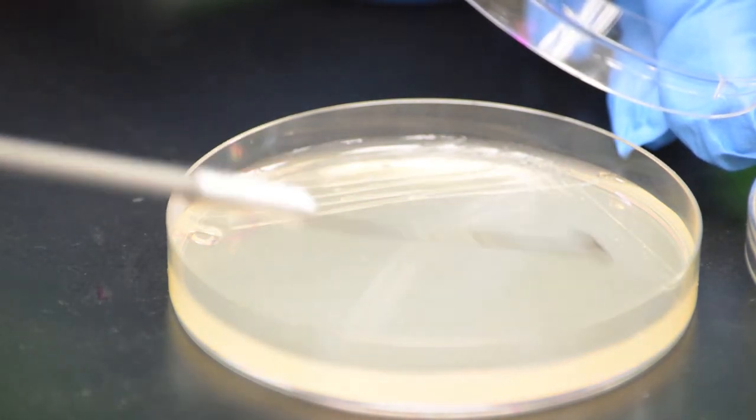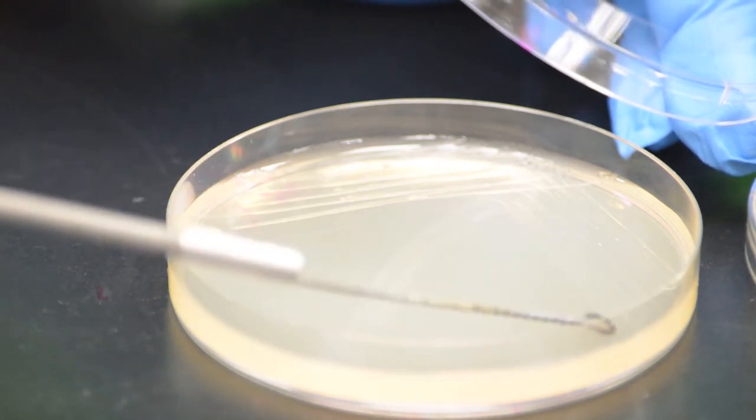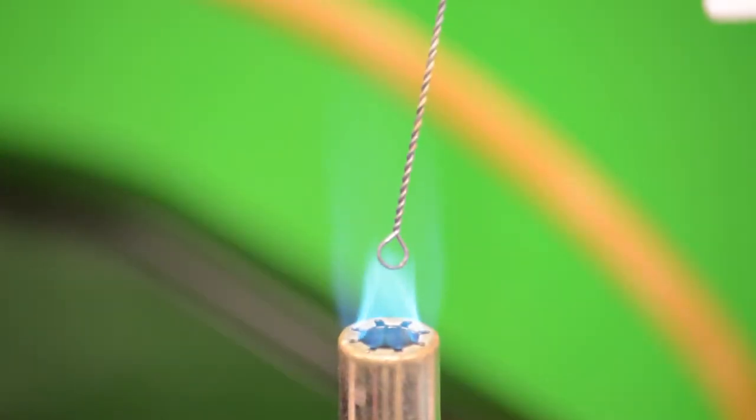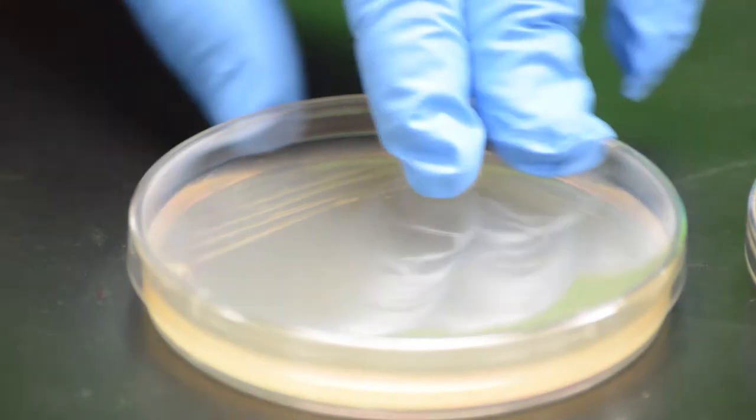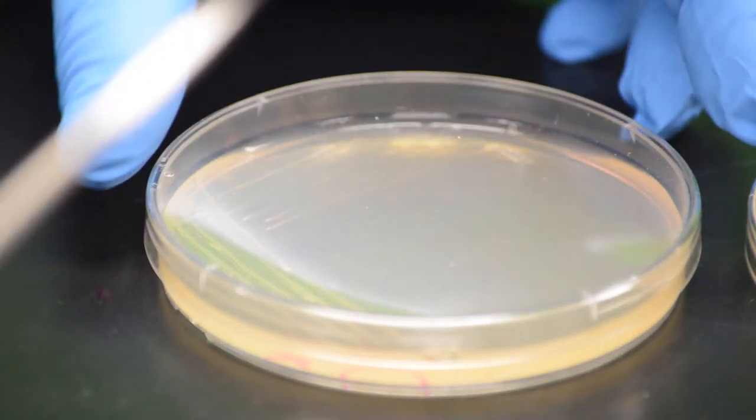Repeat those steps: flame the loop, let it cool, touch the last set of streaks, and zigzag to spread the culture over the next quarter of the plate.